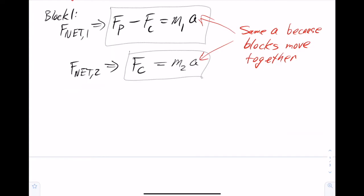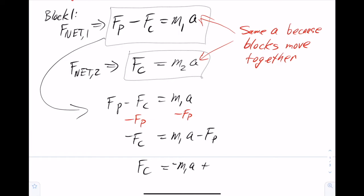One strategy that I like to use is to solve both of these equations for the same unknown and then set them equal to each other. I can see that equation 2 is already solved for Fc. I'll go ahead and solve equation 1 for Fc. So I need to get Fc by itself, so I'm going to subtract Fp from both sides, and that's going to give me negative Fc equals M1a minus Fp. Now I need to get rid of that minus sign, so I'll multiply both sides by minus 1, and that's going to give me Fc equals negative M1a plus Fp.